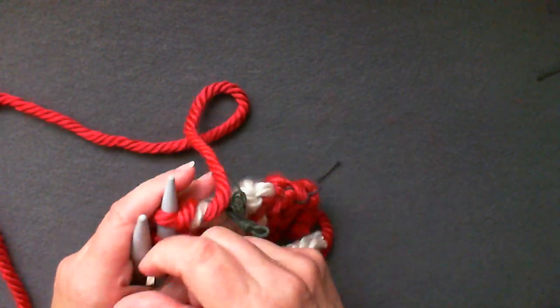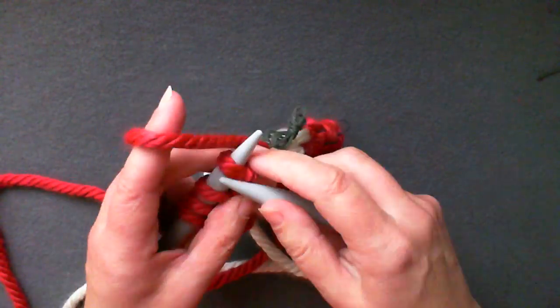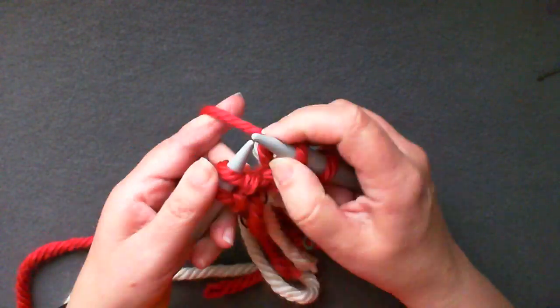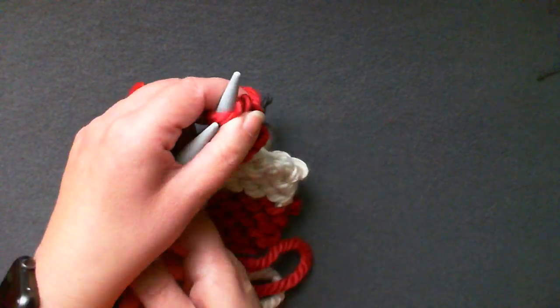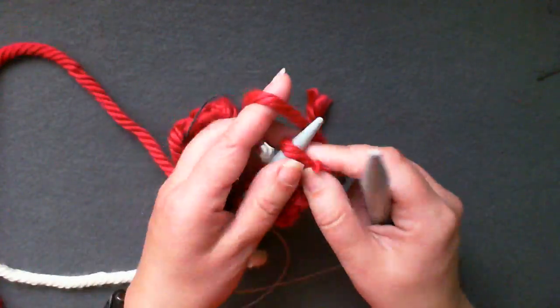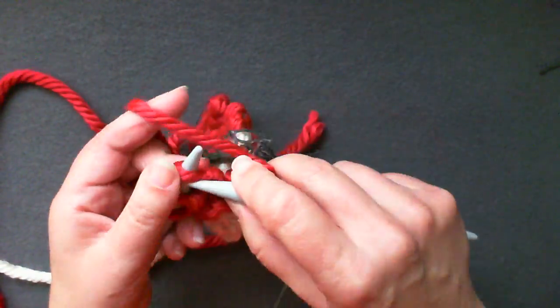Turn your work, work back to the other edge, drape over the waste yarn and continue working this way for the number of rows you need until the next color change.